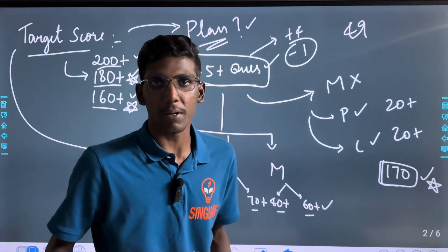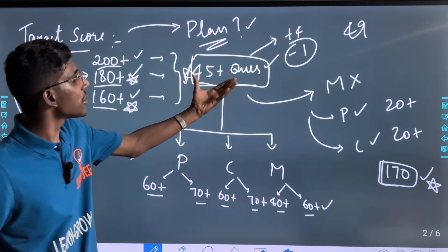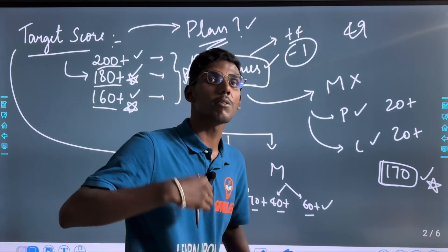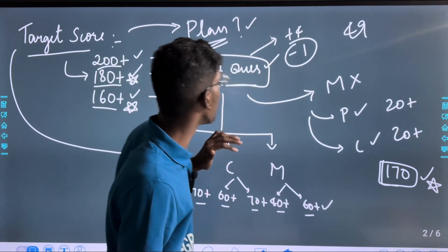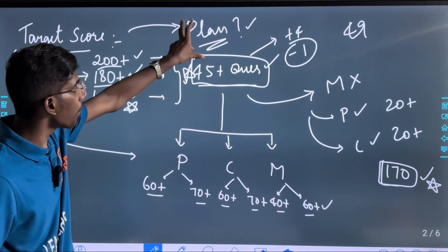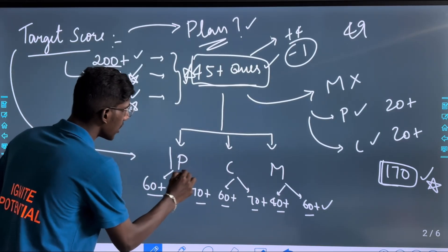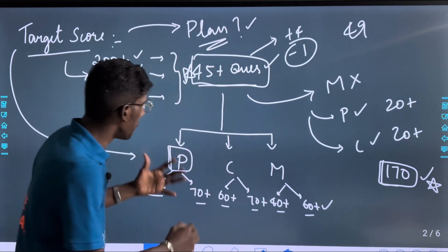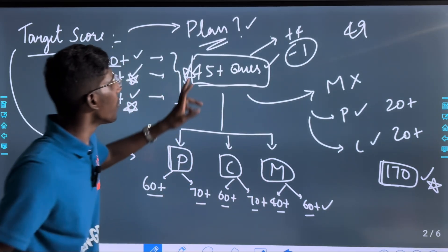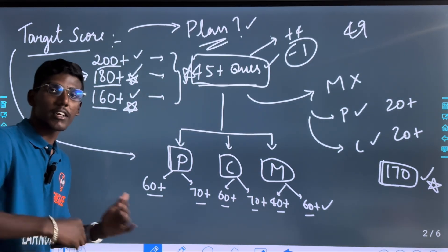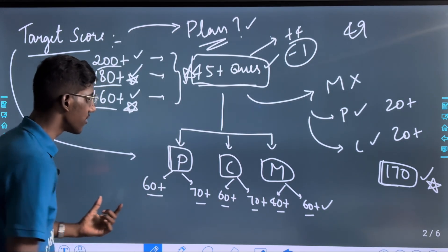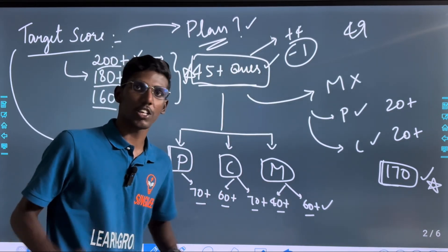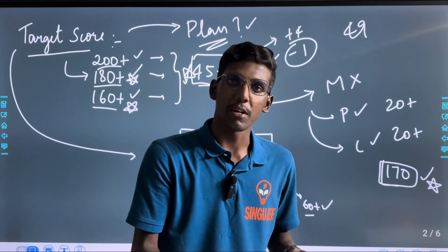It is possible to get 180 plus. So 45 plus questions should be correct. That's why I will give a clear plan. There are 45 questions in PCM. In PCM, there are 60, 60, and 60 markings — that's the target structure.